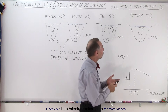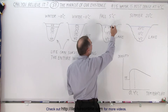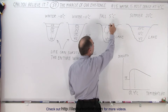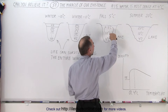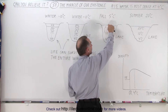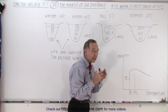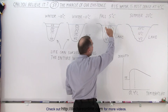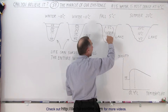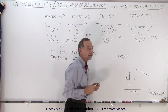So what happens when it gets colder outside? As it gets colder, the water at the top gets colder, becomes more dense, and will sink to the bottom while the warmer water rises to the top. But the four degrees Celsius water will remain at the bottom, and no water will replace it because it is more dense than any other temperature above it.